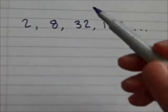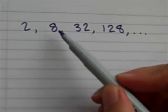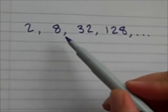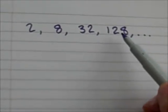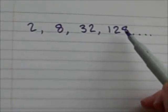So first of all I need to make sense of the sequence. To get from 2 to 8 I multiply by 4, to get from 8 to 32 I multiply by 4, to get from 32 to 128 I multiply by 4 and so on.